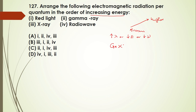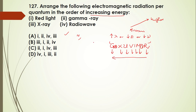Gax Vimmer stands for: Gamma, X-ray, Ultraviolet, Visible, Infrared, Microwaves, Radio — this is the increasing order of wavelength or decreasing order of energy. For the question, the first element goes to radio, then visible, then X-ray, so the order follows this mnemonic. The answer to question 127 is D.